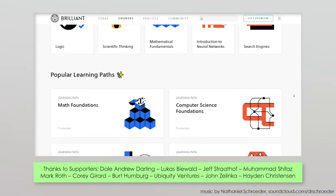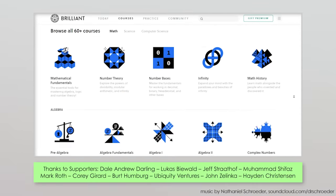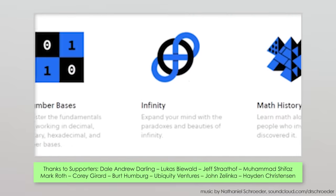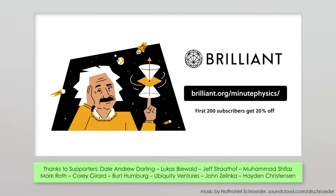And they have interactive courses ranging from logic, to fundamentals of computer science, to quantum mechanics, to infinity and beyond. Literally, they have courses about infinity. To gain a deeper understanding of science and mathematics, and to sign up for free, go to Brilliant.org slash MinutePhysics. The first 200 people will get 20% off an annual premium subscription, with full access to all of Brilliant's courses and puzzles.